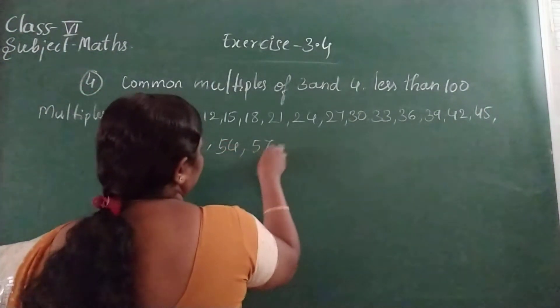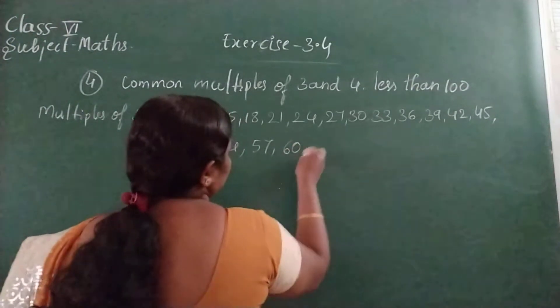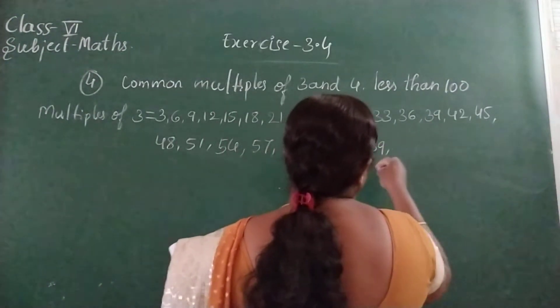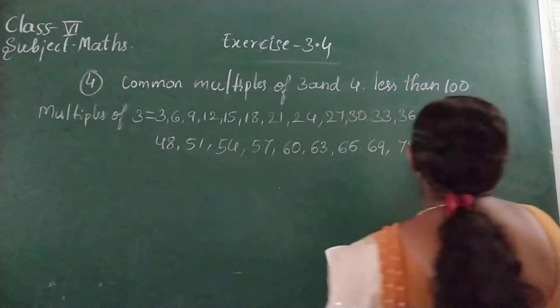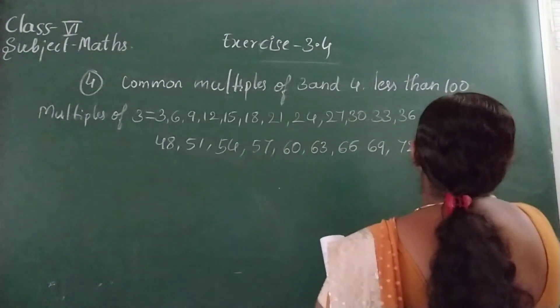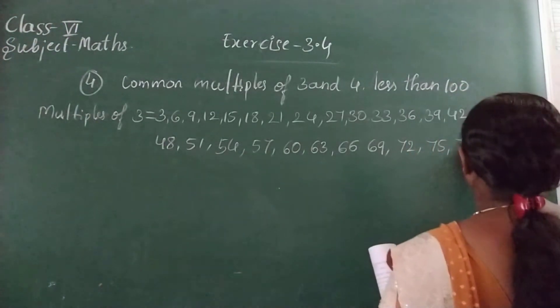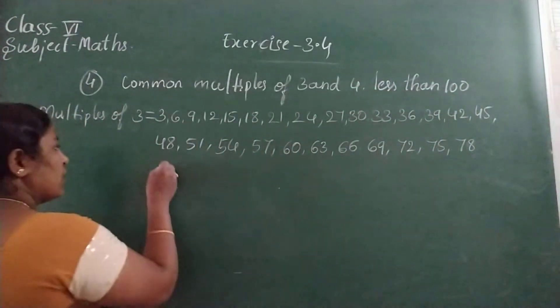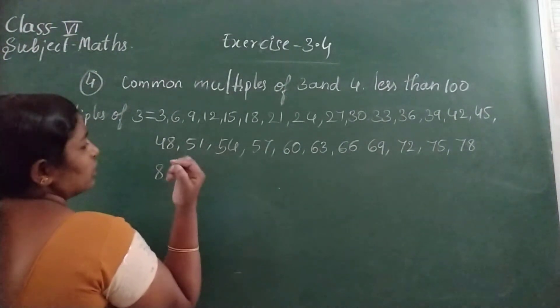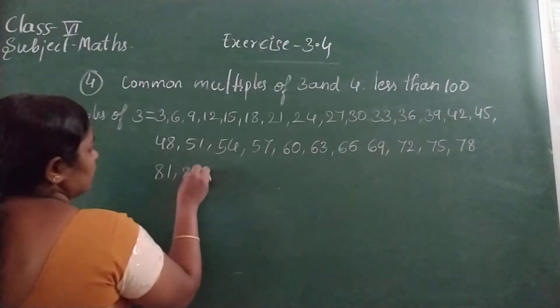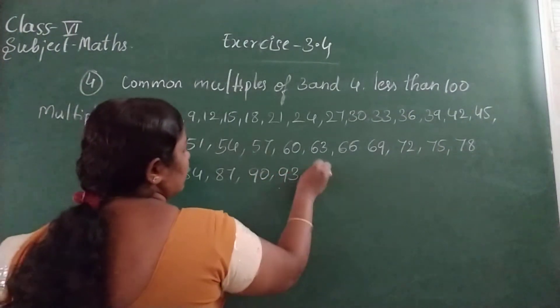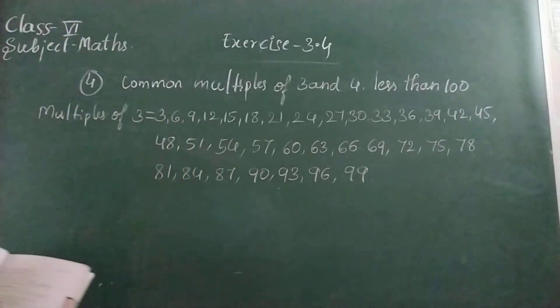Then 57, 60, 63, 66, 69, 72, 75, 78, 81, 84, 87, 90, 93, 96, 99. These all are the multiples of 3 less than 100.